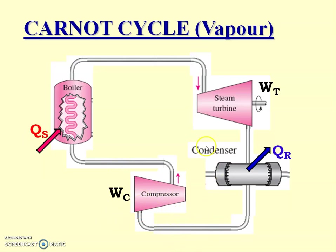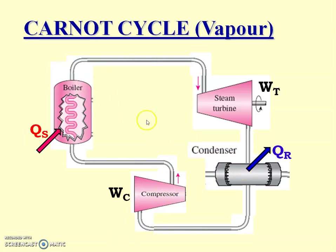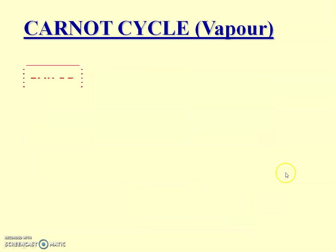So these are the components of the Carnot cycle with vapor as a working medium. In sequence: boiler where heat is supplied, turbine giving us work done, condenser from where heat is rejected, and compressor to which we supply work done. The boiler is a high temperature source where heat is supplied, and the condenser acts as a heat sink in which heat is rejected.